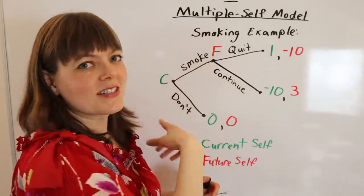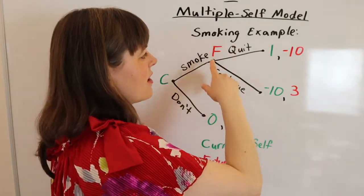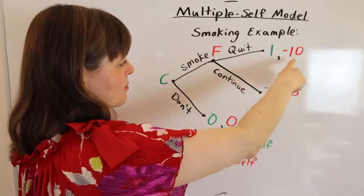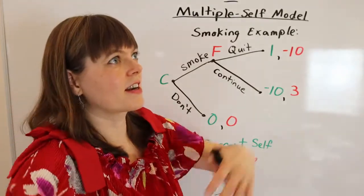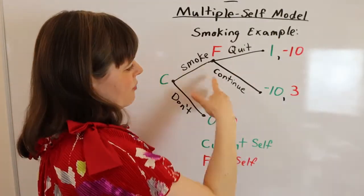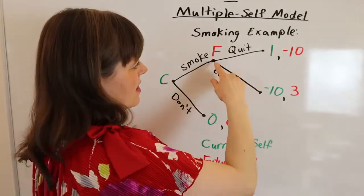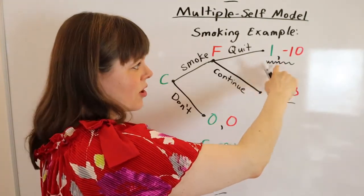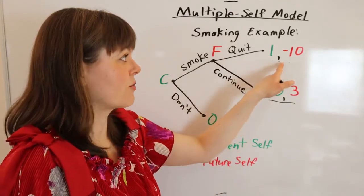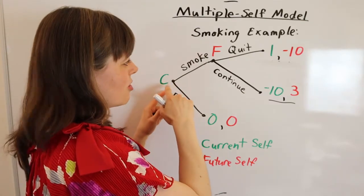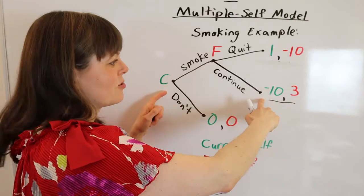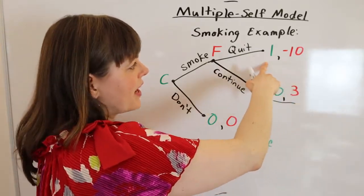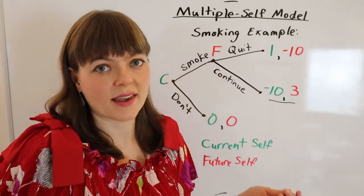Your future self has very different feelings about quitting versus continuing. Your future self gets negative 10 utils from quitting — that's really hard, with so many bad experiences that go along with quitting smoking. Continuing smoking is a positive experience; it's not fantastic, but it's pretty positive. So using backwards induction, the future self is going to prefer to continue. Even if the current self would like to reach the quit node, the future self will not allow the current self to ever reach that node. So when the current self makes this decision, the two real options are: smoke — in which case the future self will probably choose to continue and you get negative 2 utils — or don't smoke, giving up the possibility of gaining that 1 util from trying and quitting, because you're playing the game against your future self.